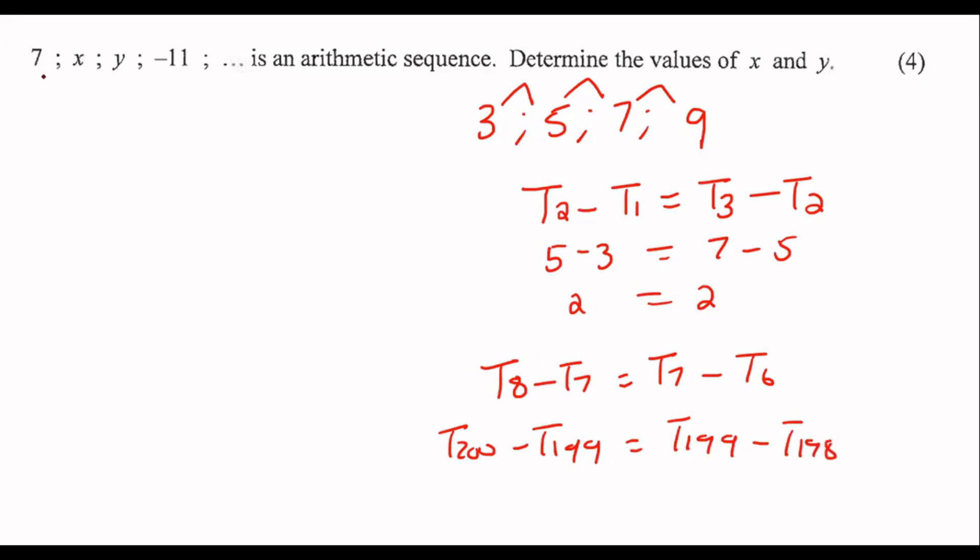You could say term 200 minus term 199 must be the same as term 199 minus term 198. It doesn't really matter. So what we can do here is we can take these three over here and we can say term 2 minus term 1 is the same as term 3 minus term 2. That's going to give us x minus 7 is equal to y minus x.